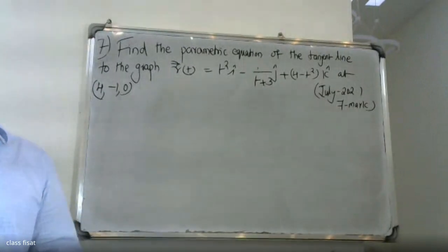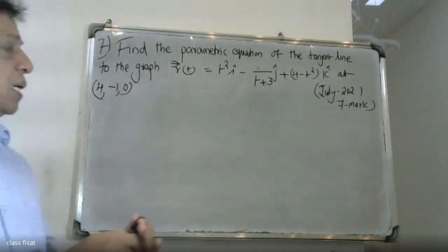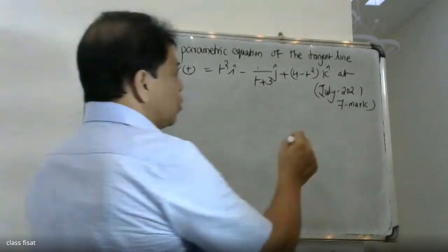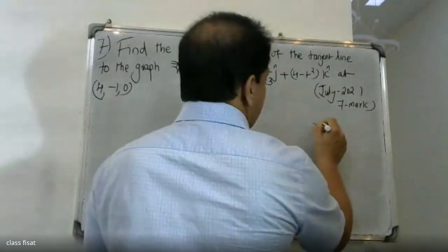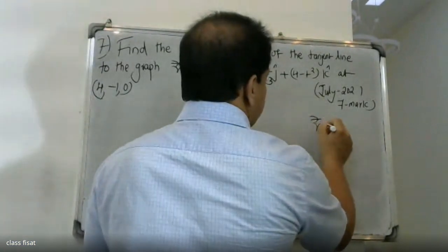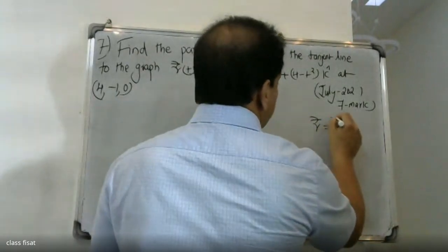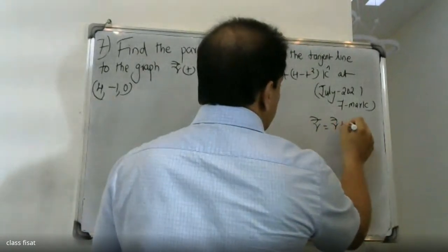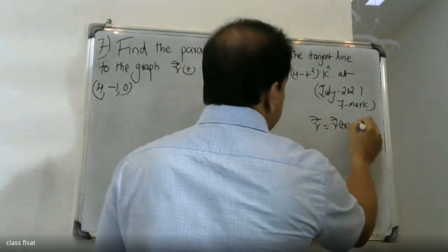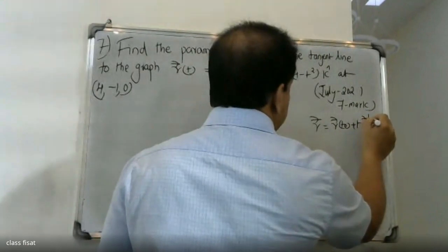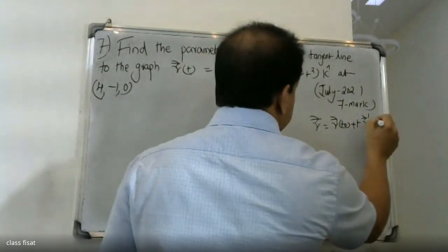The equation of the tangent line is r equals r of t₀ plus t into r dash of t₀.